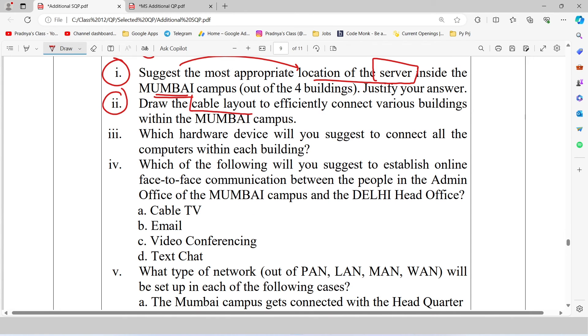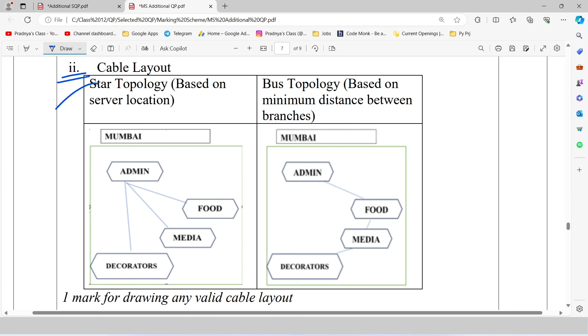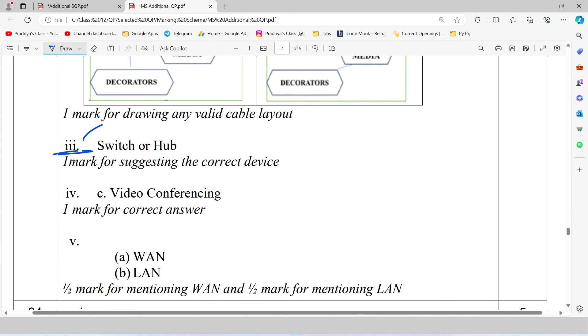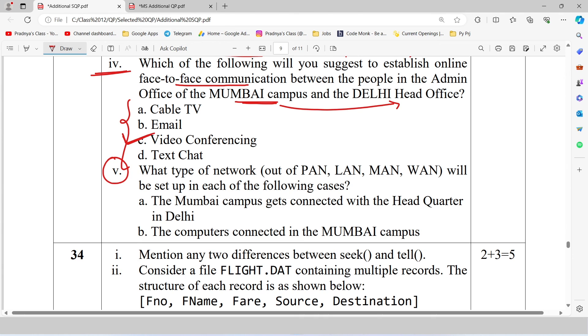In the second question we need to suggest cable layout to connect the various buildings of Mumbai campus. As I explained you, we will be suggesting star topology, in which we will be connecting other buildings to admin building. Here is the cable layout. Based on star topology we connected other blocks to admin block. If you want to go ahead with bus topology, you need to check the distance between the branches. Here is the third question. Which hardware device will you suggest to connect all the computers within each building? Always we will be using switch. Look at the fourth question. We need to suggest online face to face communication between the people in the admin office of Mumbai campus and Delhi head office. There is no doubt, among the options we will be opting for video conferencing.